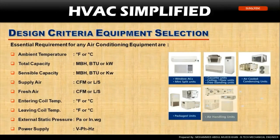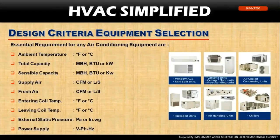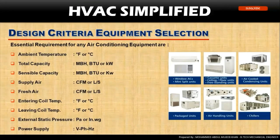These are the important and essential parameters for selecting any HVAC equipment — starting from window AC, mini splits, cassette type units, ceiling mounted, floor standing, air-cooled condensers, package units, air handling units, and chillers. These are the parameters required to select any HVAC air conditioning equipment.